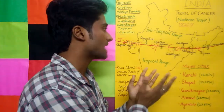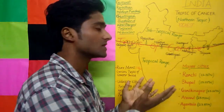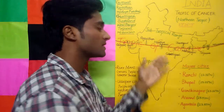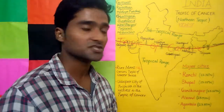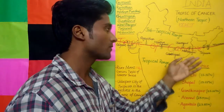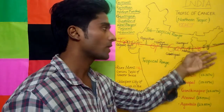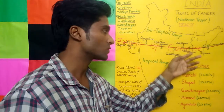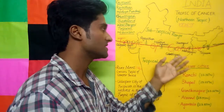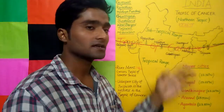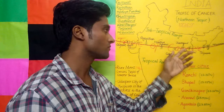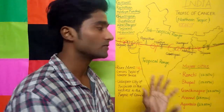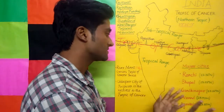You will see the signboard of the Tropic of Cancer in Madhya Pradesh, near Sanchi. You can also find Tropic of Cancer signboards in Tripura, West Bengal in the Nadia district, and near Ranchi in Jharkhand.